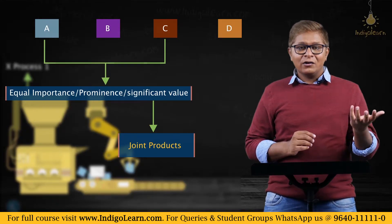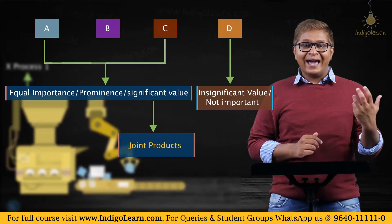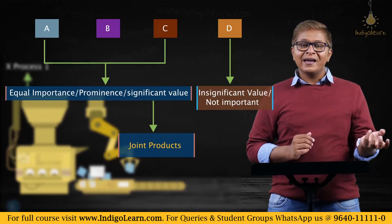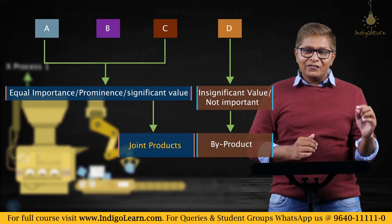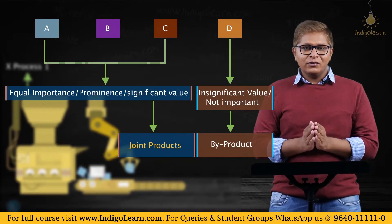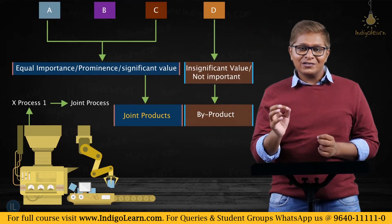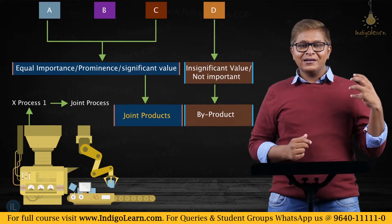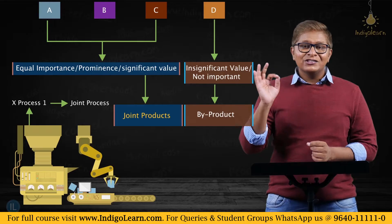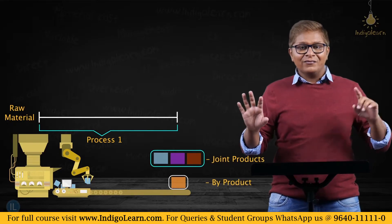The fourth product, D, has insignificant value and is not as important when compared to products A, B, and C. So we call product D the by-product — products of less significance which are not as important as the main products are called by-products. Process 1, which we are undertaking, is called the joint process — the common process where we get the three joint products and one by-product.